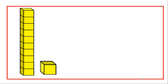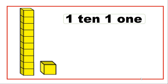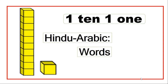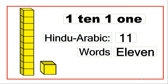Let's now look at these numbers. If I have one block of tens and one block of ones, then I have one ten and one one. This gives me eleven in Hindu Arabic, and we read this as eleven.